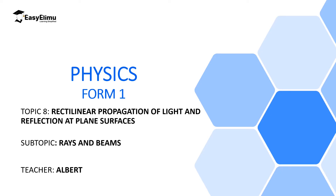Now in this lesson we are going to see the light which has been produced from a source — how does it travel, and which path does it follow? So here we are going to focus on rays and beams. We are going to see that light travels in terms of rays and beams. My name is Albert, and I hope you will enjoy the lesson.